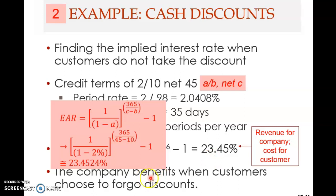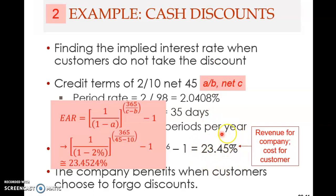The company benefits when customers choose to forego the discount, or equivalently, take the credit. If you forego the discount, you take the credit. If you take the discount, you forego the credit. So, finding the implied interest rate when customers do not take the discount means they take the credit. This is the cost for the customer but also the revenue for the company.